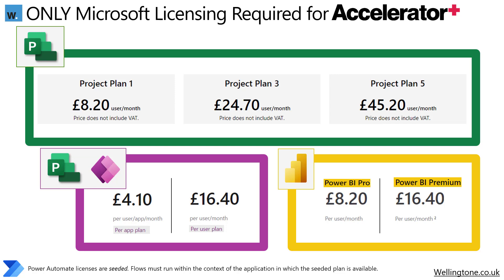Your exact circumstances determine which specific tier of license you need, but when it comes to Power Apps and Power BI you can easily get away with the cheaper variants. Most enterprise organizations will probably already have access to the Power Platform and maybe even Project, so it's worth having a chat with someone in IT. If you already have the licenses, it's just the case of getting the solution set up and configured. Power Automate licensing is seeded within Project and available within the context of the application, so that's one less license to think about.